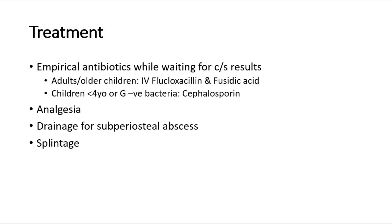Treatment for acute hematogenous osteomyelitis includes giving empirical antibiotics while waiting for blood culture and sensitivity results for the specific organism. For adults and older children, give IV flucloxacillin and fusidic acid. For children less than four years old or cultured gram-negative organisms, give cephalosporins. Analgesia for pain relief, and if there is a subperiosteal abscess, drain the abscess. Splintage and skin traction in upper femur osteomyelitis can help prevent hip dislocation.